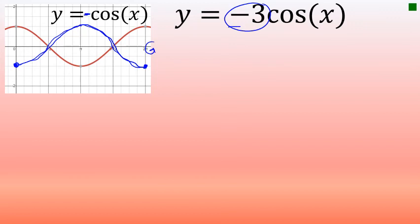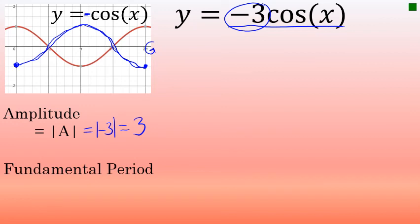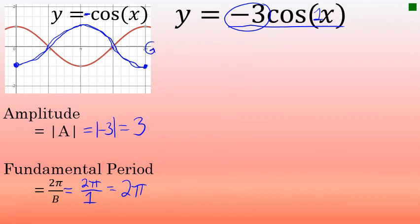The blue curve on screen shows the general shape of y equals negative cosine of x, which y equals negative three cosine x will also follow. The amplitude is the absolute value of negative three, which is three — amplitude is always positive. The value of b is 1 (understood), so the fundamental period is two pi over one, or two pi radians. It takes two pi radians to complete one cycle.